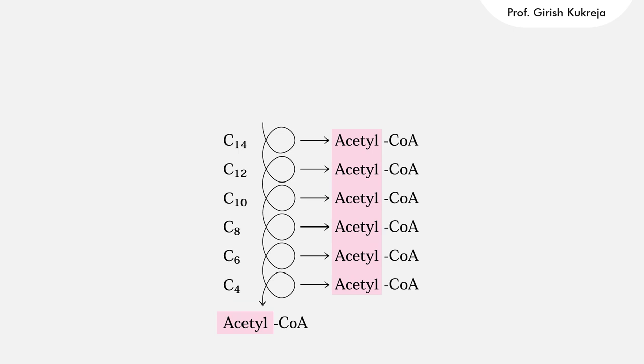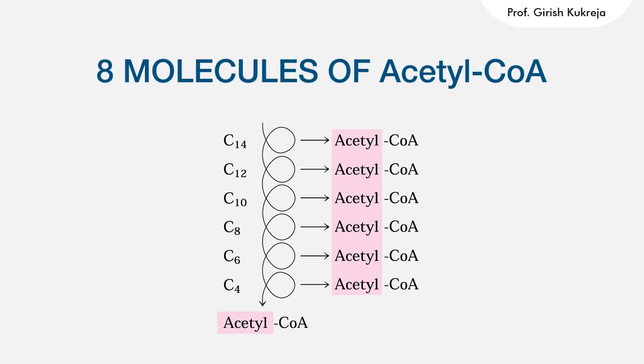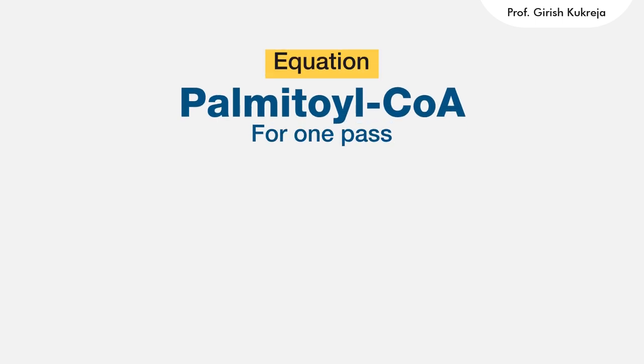Six more passes through this pathway will give seven more molecules of acetyl-CoA. Thus, in all eight molecules of acetyl-CoA are formed if we start from 16 carbon palmitate that has entered as palmityl-CoA. For one pass, the equation for palmityl-CoA in beta oxidation is palmityl-CoA plus CoA plus FAD plus NAD plus plus H2O to give maristyl-CoA plus acetyl-CoA plus FADH2 plus NADH plus H plus.